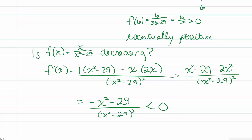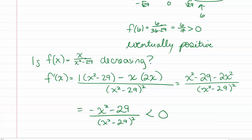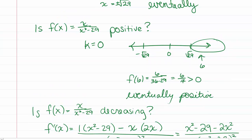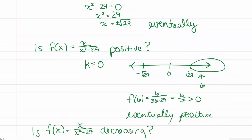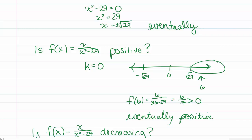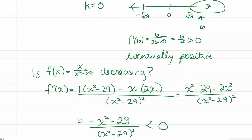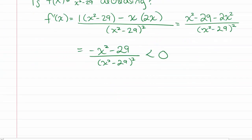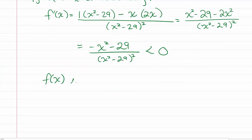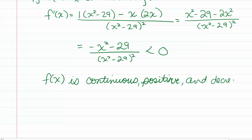We said it was eventually positive and eventually continuous. What do we mean by 'eventually'? In both cases we need x to be bigger than the square root of 29, and since 6 is bigger than the square root of 29, we say f of x is continuous, positive, and decreasing on the interval 6 to infinity. Therefore we can use the integral test.